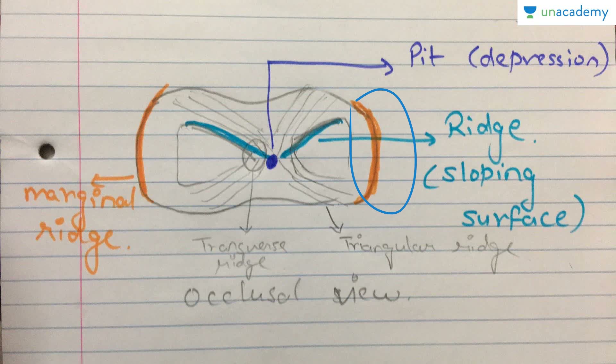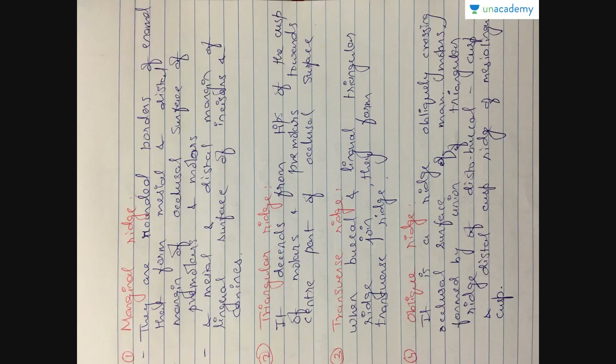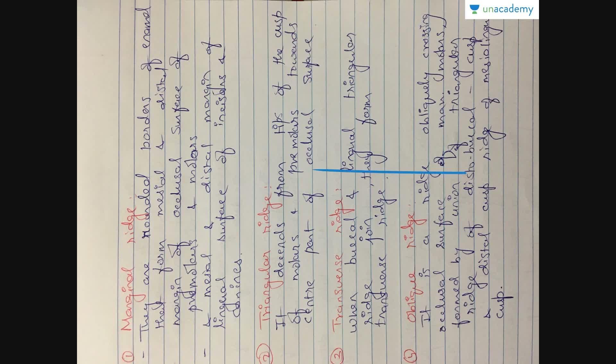The marginal ridge is also present on the mesial and distal surface of the anterior teeth. This is the occlusal view of the posterior tooth. The rounded borders of enamel present on the mesial or distal surfaces of the occlusal part is the marginal ridge.